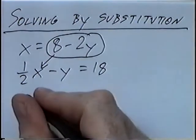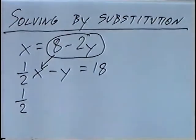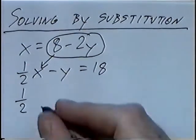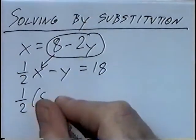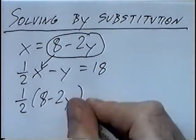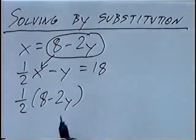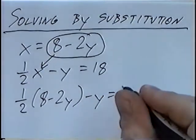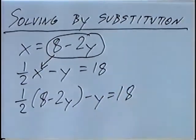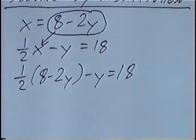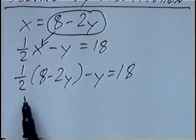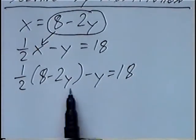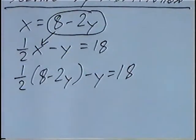Rewriting the second equation, we'll have one half, but instead of x we'll substitute 8 minus 2y, and then the rest of the equation: minus y equals 18. By substituting for x, we have eliminated the x, and now we can just solve for the single variable y.